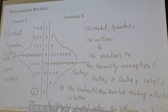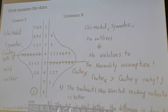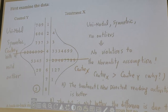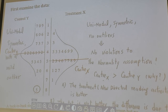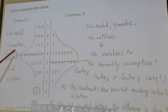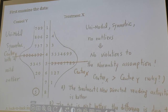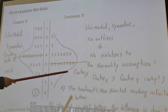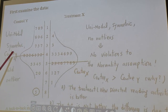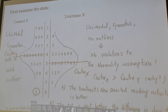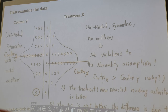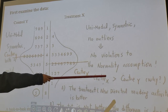We also observe the center of Y compared to the center of X. The center of X is bigger than the center of Y. That means the average DRP test score for the treatment group is higher than the average DRP test score for the control group.